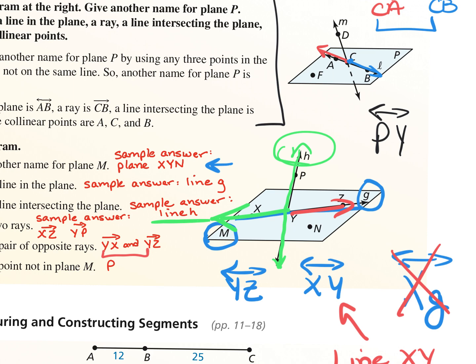The last one: name a point not in plane M — that was point P at the top. Everybody good on the naming? Use the symbols. For number four, rays YZ and YP are acceptable — just make sure you have the arrow on top.